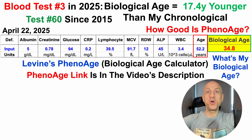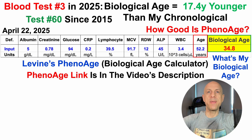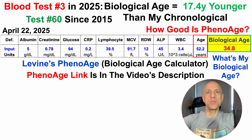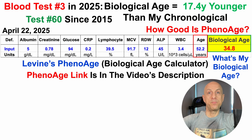Rather than going over that data every time after I blood test and make a corresponding video, I made a video specific for that, which looks at how this clock correlates with chronological age and its association with all-cause mortality risk. So if you're interested in seeing how good this clock is or not, that video will be in the right corner.